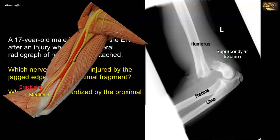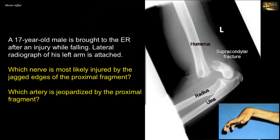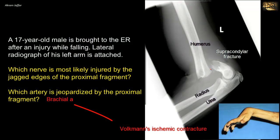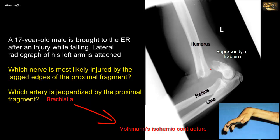The nerve most likely injured is the median nerve, less commonly the radial nerve. The artery affected is the brachial artery. Injury or compression of the brachial artery can result in Volkmann's contracture. Although there is a collateral circulation around the elbow, this may not compensate for the occlusion of the brachial artery, resulting in ischemia of the flexor muscles of the forearm and partial necrosis. The muscles will be replaced by fibrous tissue after necrosis, becoming thin and shortened, resulting in a flexion deformity of the wrists and fingers called Volkmann's ischemic contracture.